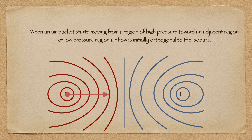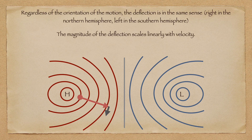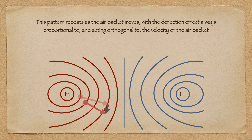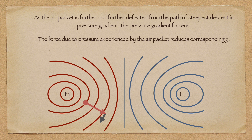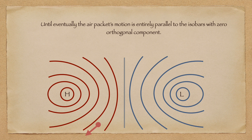And indeed, this is what happens initially. An air packet at the high-pressure system will progress towards the low-pressure system across the steepest path of descent in the isobars. But as a packet of material moves, it is always deflected orthogonal to its velocity — rightward in the Northern Hemisphere, leftward in the Southern Hemisphere. As the air packet is deflected away from the path of steepest descent in pressure gradient, the pressure gradient decreases and the force due to air pressure on the air packet is reduced. This cycle repeats as the air packet moves, deflected in the same sense, to the right in the Northern Hemisphere and to the left in the Southern Hemisphere, and the air pressure gradient reduces.